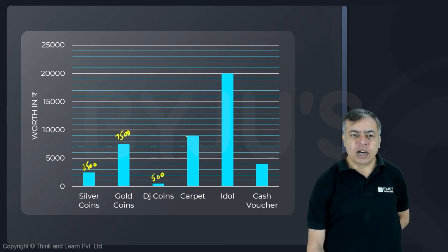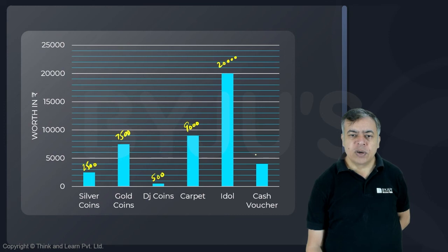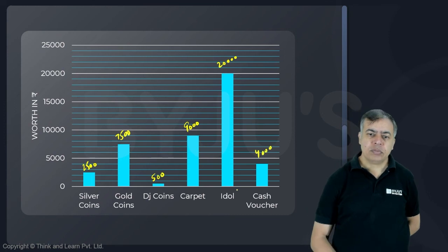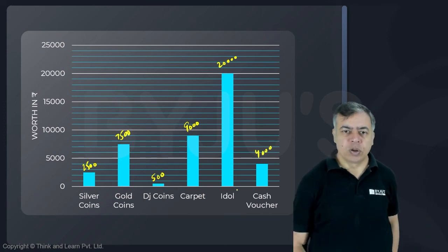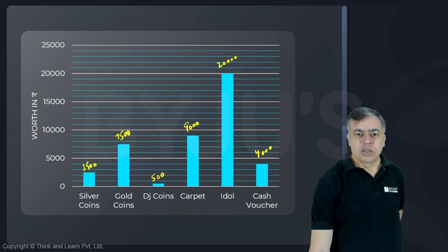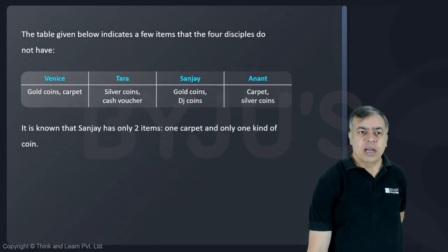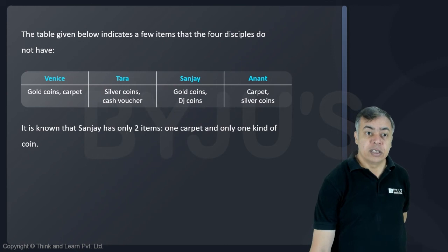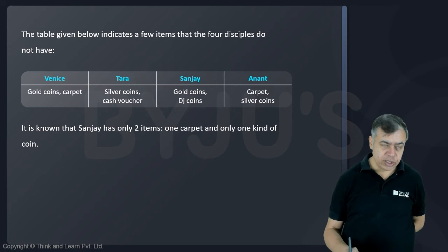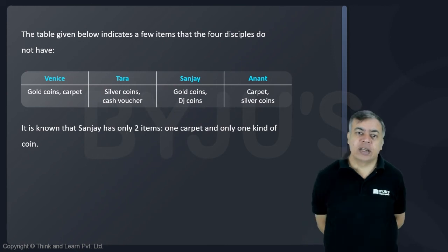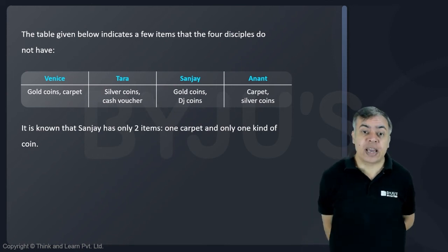One carpet worth 9,000, one idol worth 20,000, and one cash voucher worth 4,000. There is another constraint: the table below indicates a few items that the four disciples do not have.